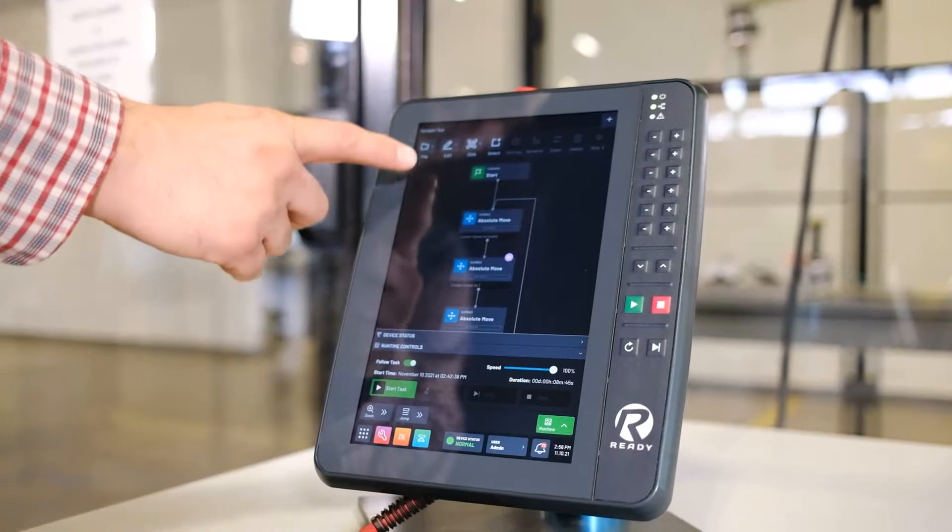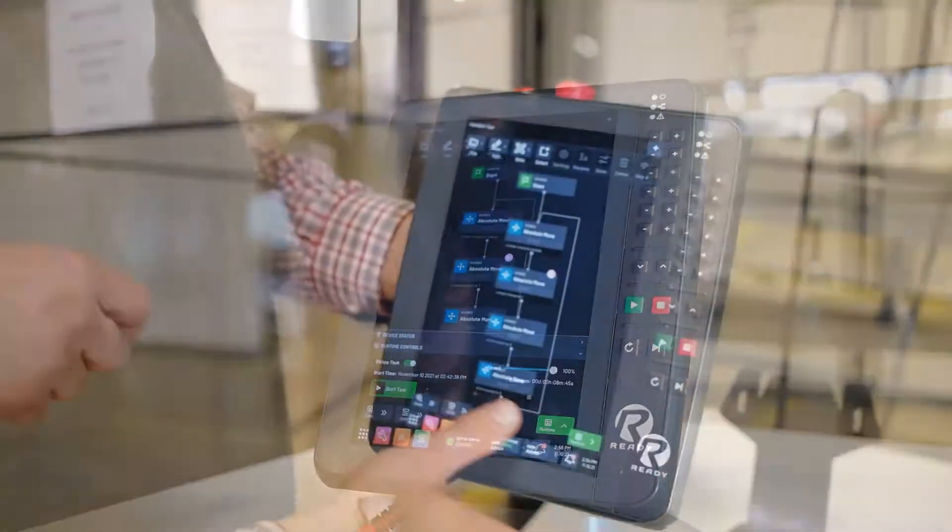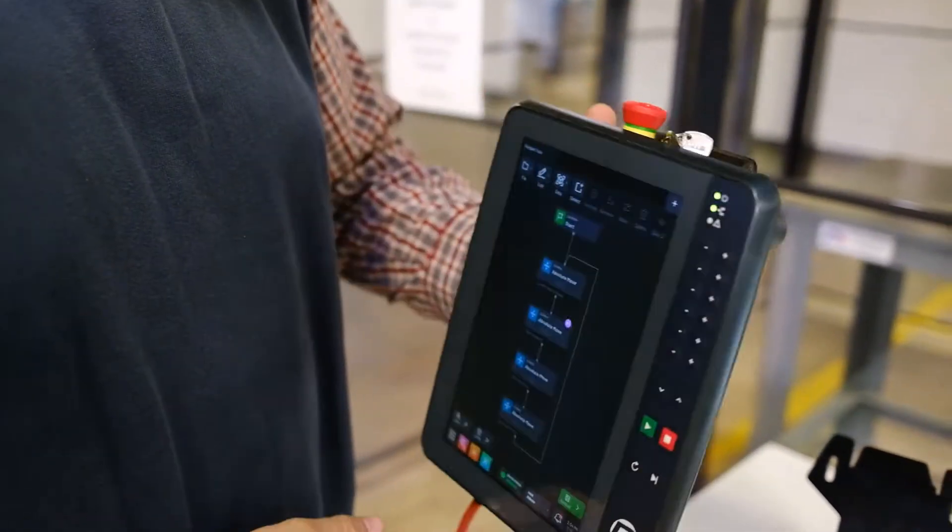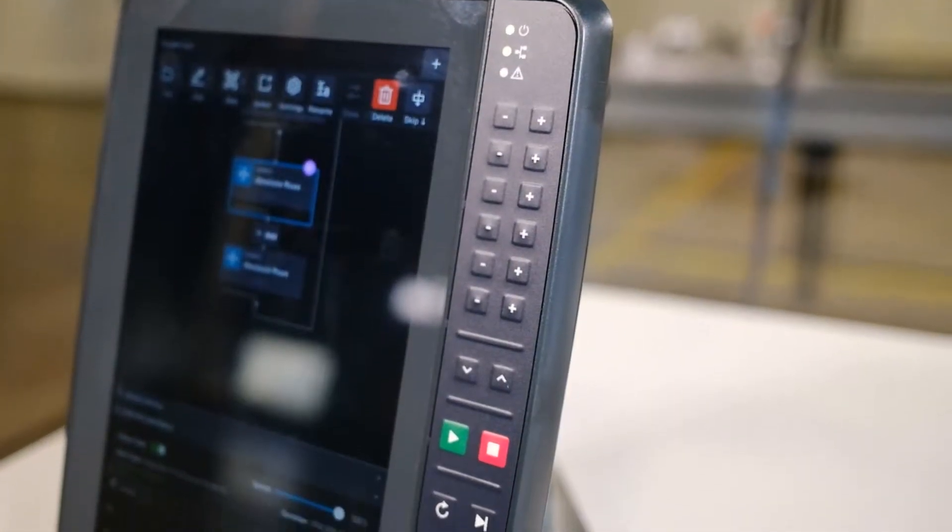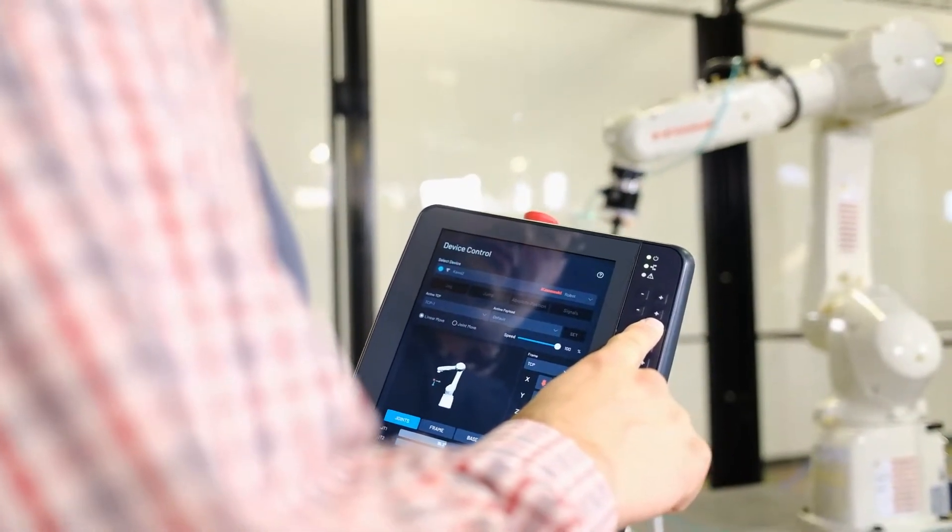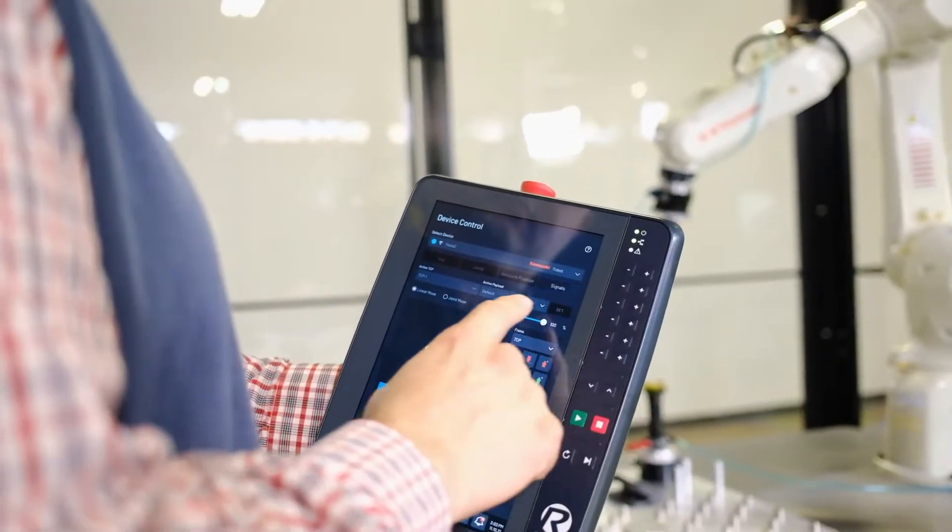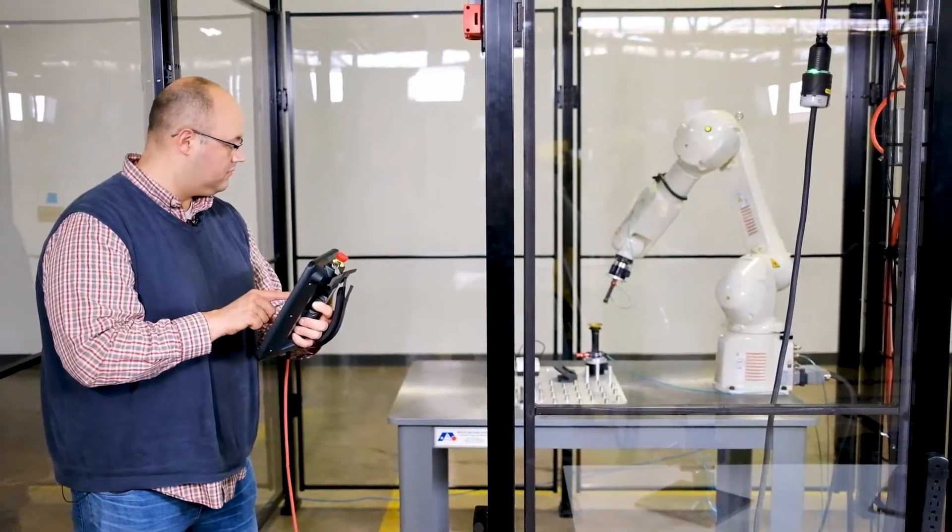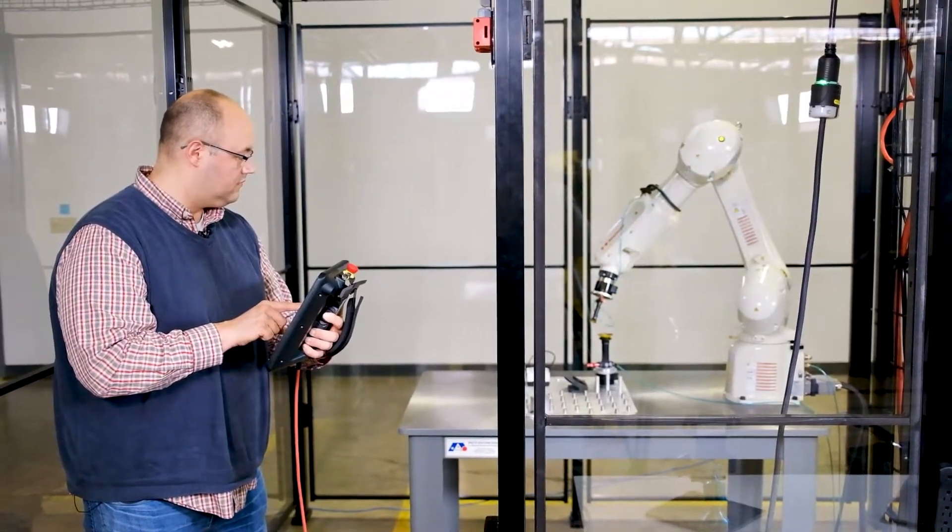The Teach Pendant features a responsive touchscreen interface and an ergonomic design that rests comfortably in your hand while programming. It has 18 responsive buttons on the front panel, 12 of which are used for controlling robot motions like joint and linear moves. It has a durable enclosure and is easily maneuverable around the work cell when programming with a 10-meter-long cable.